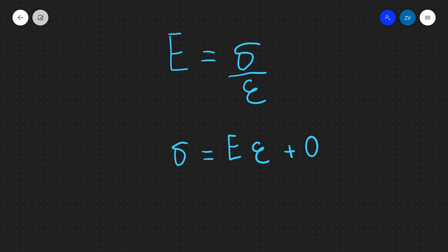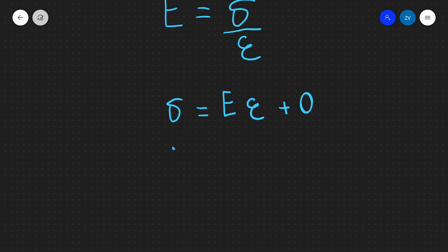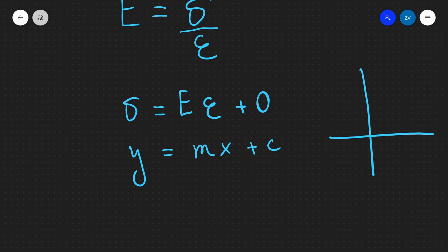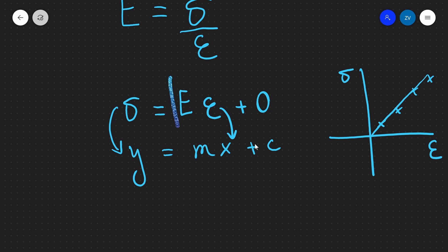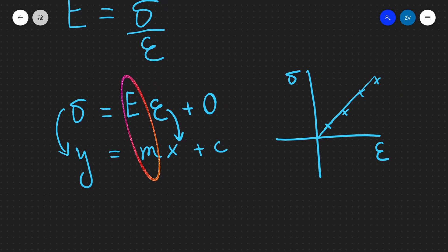Now if we write stress equals Young's modulus times strain and compare it to y equals mx plus c, imagine a graph with stress on the y-axis and strain on the x-axis. If the data points form a straight line through the origin, then the gradient of that graph is Young's modulus. So Young's modulus is the gradient of a stress against strain graph, provided the graph is a straight line through the origin.